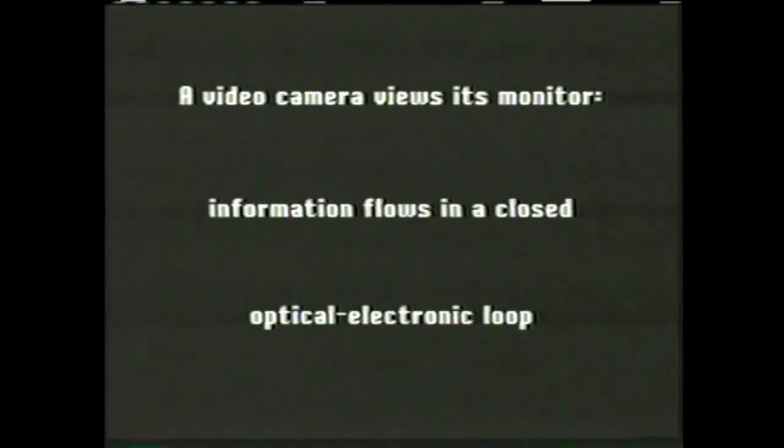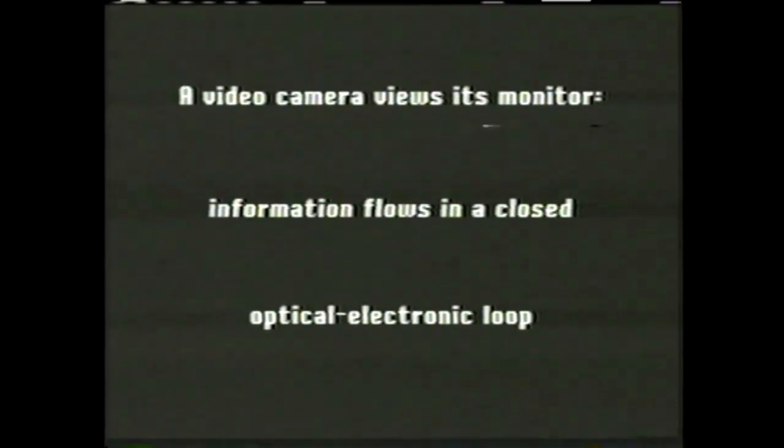A video camera feeds images to a television monitor. It dissects the field of view into an electronic signal. The monitor then reconverts this back into an image on its screen. When the camera points toward the monitor's screen, images are fed back into the camera and circulate around this closed loop.